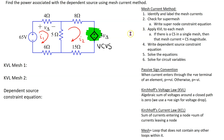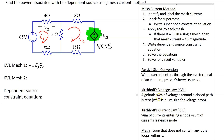Starting with mesh 1, at the 65-volt voltage source, mesh current i1 is entering the terminal marked minus and leaving the terminal marked plus. Going from minus to plus is a voltage rise, so we get minus 65. The next term is the voltage drop across the 4-ohm resistor, which only has current i1 flowing through it, giving plus 4*i1.